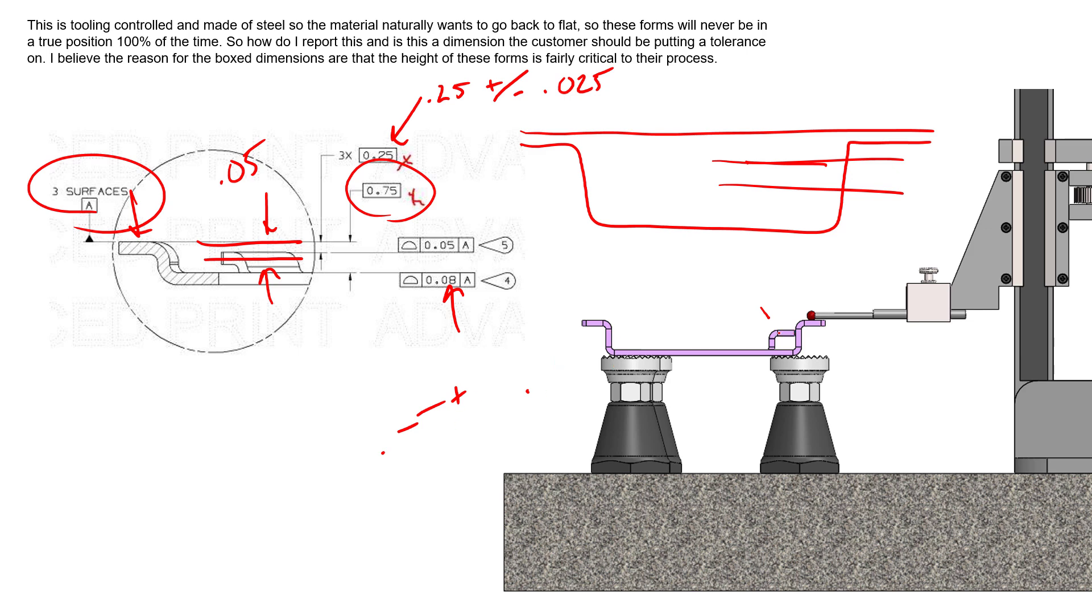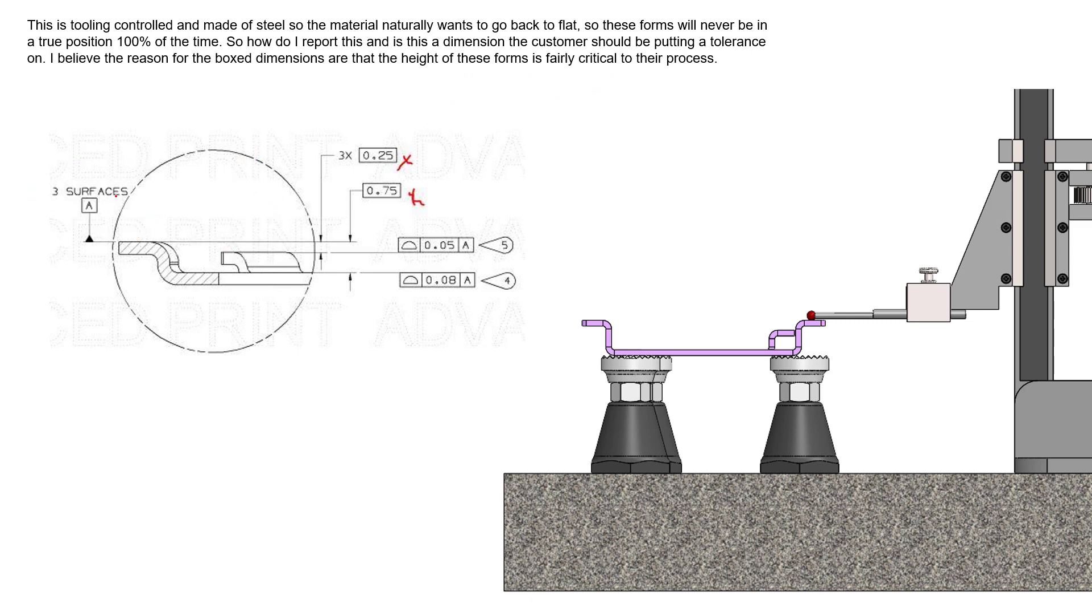Again, to reiterate how we inspect this, we're just making sure that all of the elements that make up these individual surfaces fit inside their respective tolerance zones of 0.05 and 0.08 centered at 0.25 and 0.75 respectively.